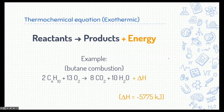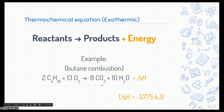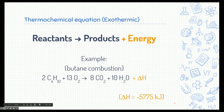Here's a thermochemical equation for an exothermic reaction. We have the reactants on one side and on the other side we have products plus energy. Think of that 'plus' as meaning 'and' — the reactants go through a reaction and produce products, and some energy is released. We saw this with butane: butane and oxygen react to form carbon dioxide, water, and energy released as heat. Specifically, negative 5,775 kilojoules of energy is being released — that's why it's a negative number.